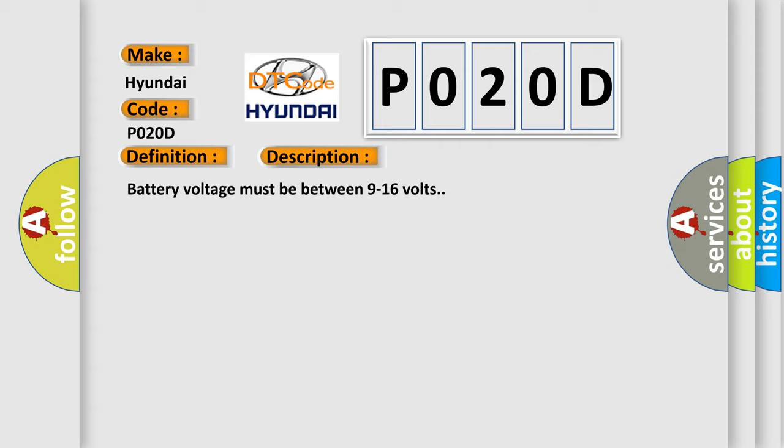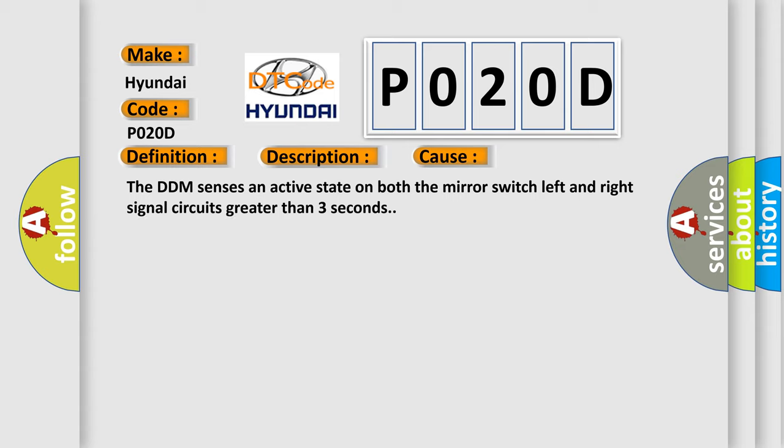This diagnostic error occurs most often in these cases: The DDM senses an active state on both the mirror switch left and right signal circuits greater than 3 seconds.